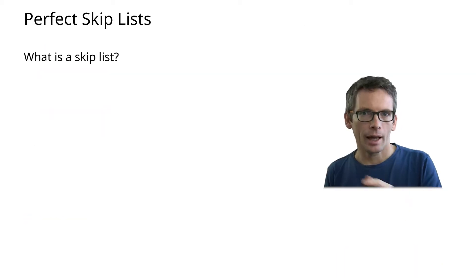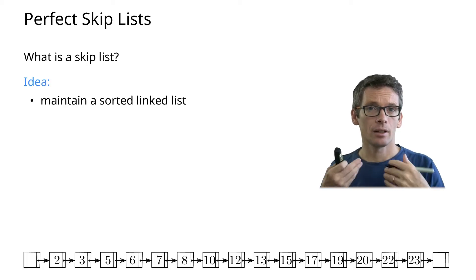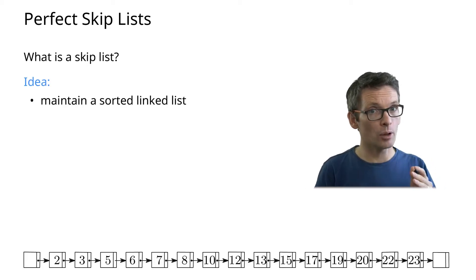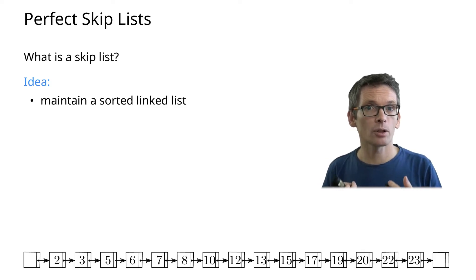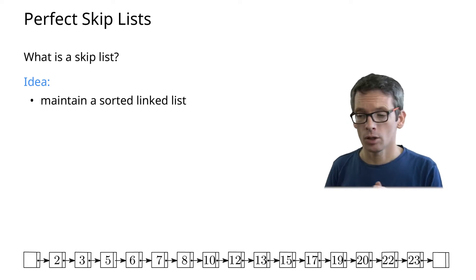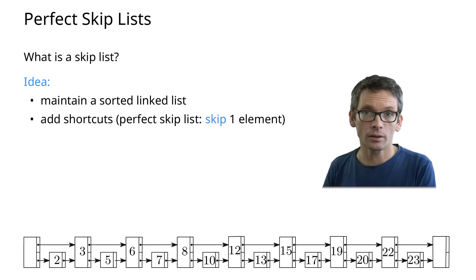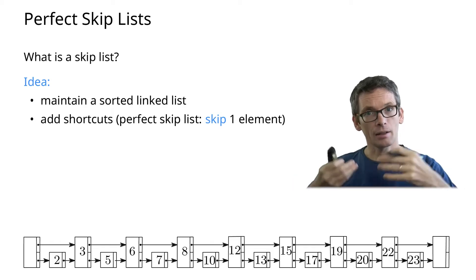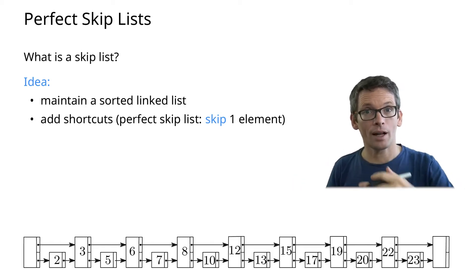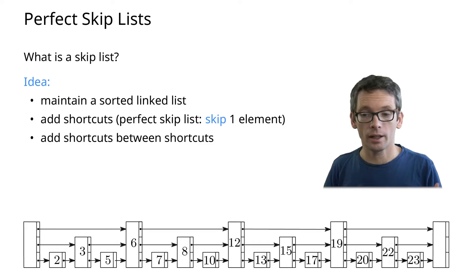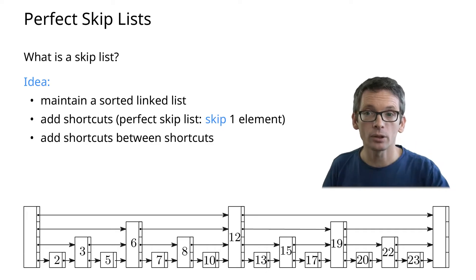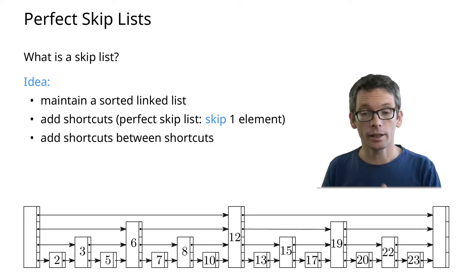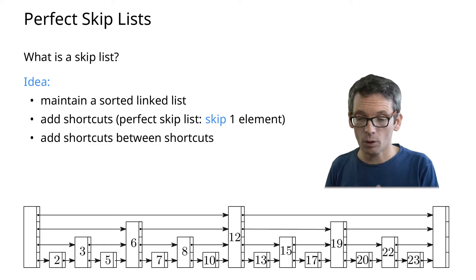So what's a skip list? As a base we're going to maintain a linked list — we're going to be able to update efficiently — but now we need to speed up the searching, and for that we're going to introduce shortcuts. We're going to have a shortcut between every second element. You can imagine the base layer as being a slow train, and now you have a faster train. Of course we can do the same trick again and have an even faster train, or have shortcuts between the shortcuts, and we can do this again and again until we only have one element left on the top level.